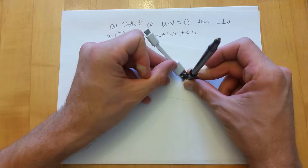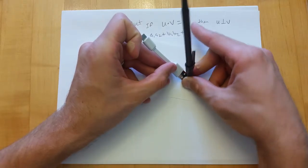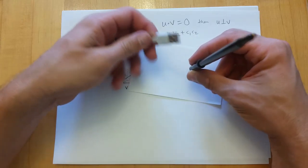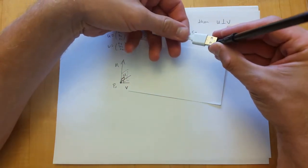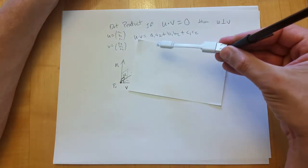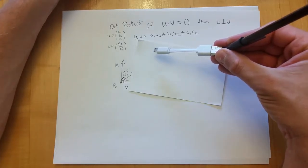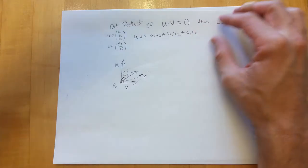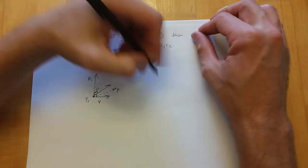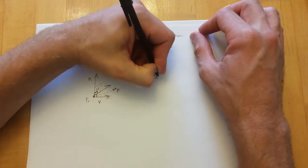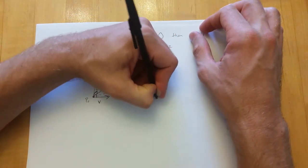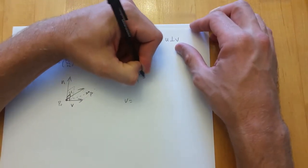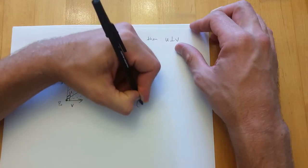What happens if you pick a point not on the plane — say, one above it? You don't get a right angle, so the dot product would not be zero. Same thing if you were below the plane: that vector would make an angle greater than 90 degrees.